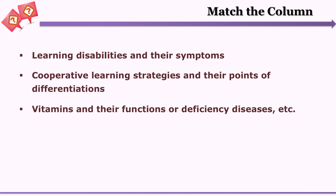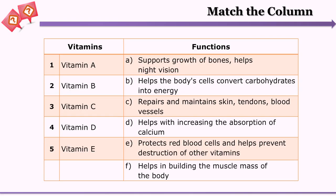On the screen you can see a match the column question where vitamins are to be matched with their functions. The columns are clearly identified as vitamins and functions. These pairs are matched for convenience, but when designing the test the functions need to be shuffled to make it challenging. You will also notice that the number of alternatives or functions is not equal to the number of vitamins — you need to give at least one or two more alternatives so the learner cannot get the correct answer by mere elimination.